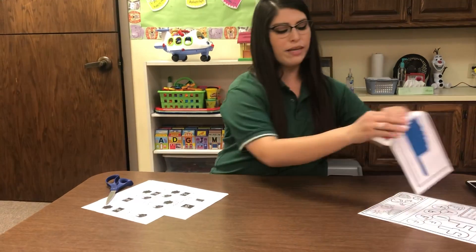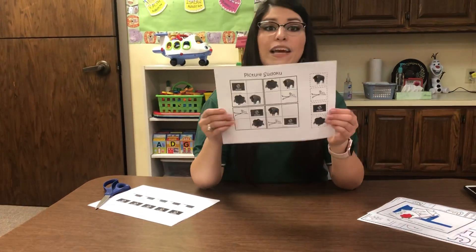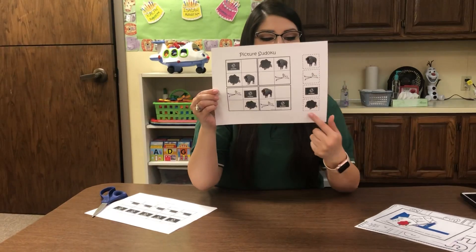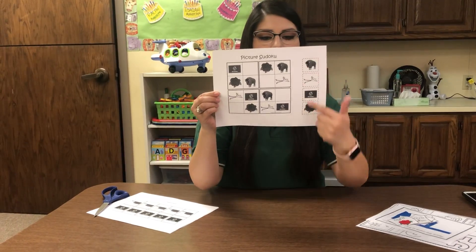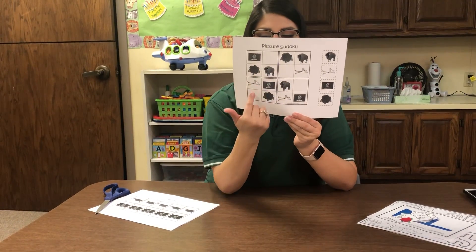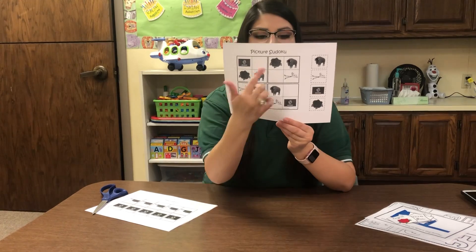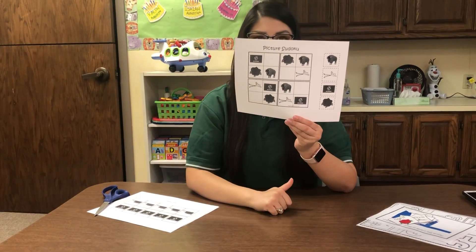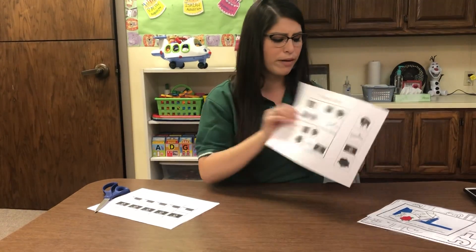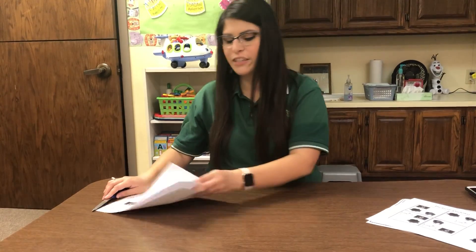We also have a picture Sudoku — this is kind of like 'what's missing.' You cut these on the dotted line, and then mommy and daddy can help you find what's missing in each of the pictures, so you can have one of each picture in all of our Sudoku boxes.